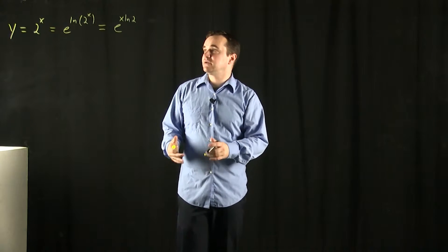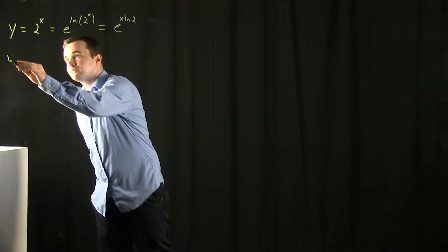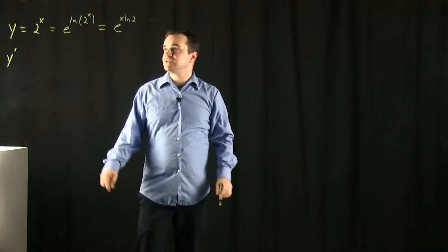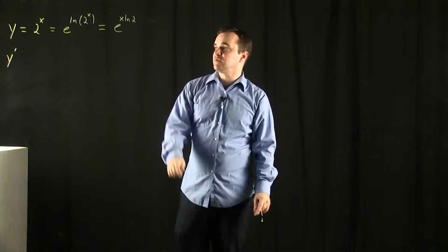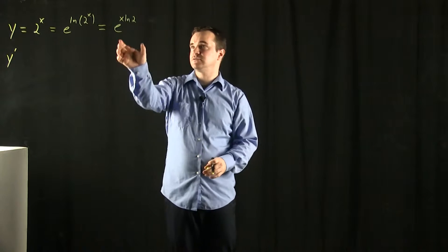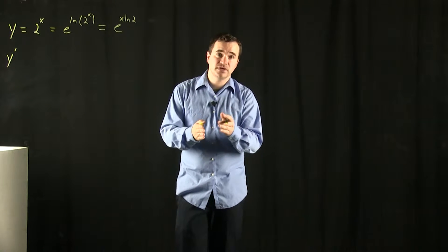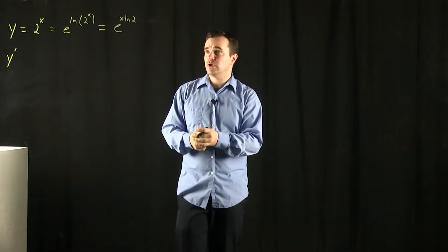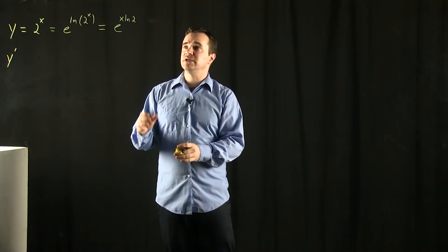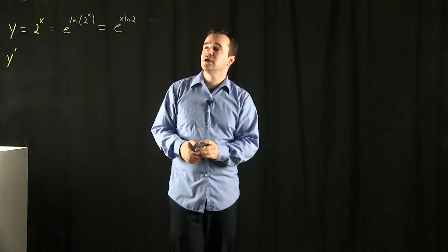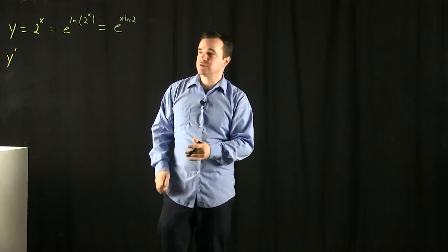So I now want to take y prime. And since 2 to the x is equal to this expression here, it's good enough for me to just take the derivative of e to the x times natural log of 2. And in order to do this, I can use the chain rule. I've got my outside function being e to the x and my inside function being x times natural log of 2.